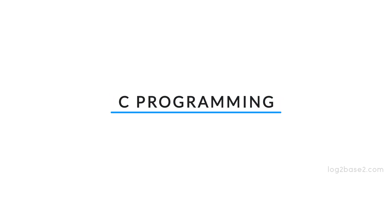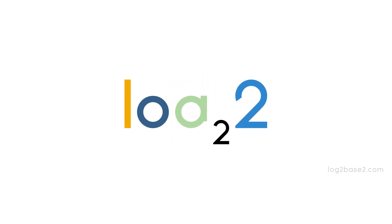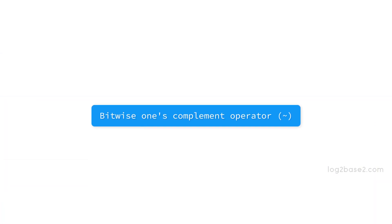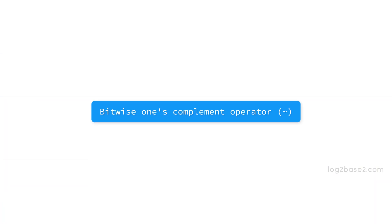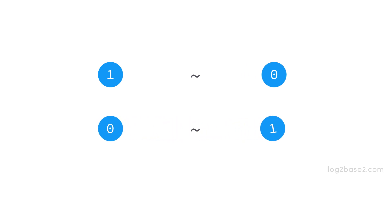Hi friends, in this video we are going to discuss the bitwise one's complement operator. The bitwise one's complement operator is a unary operator and it is denoted using a tilde. What it does is inversion — it will invert the binary bits. If the bit is one it will convert it into zero, and if the bit is zero it will convert it into one.